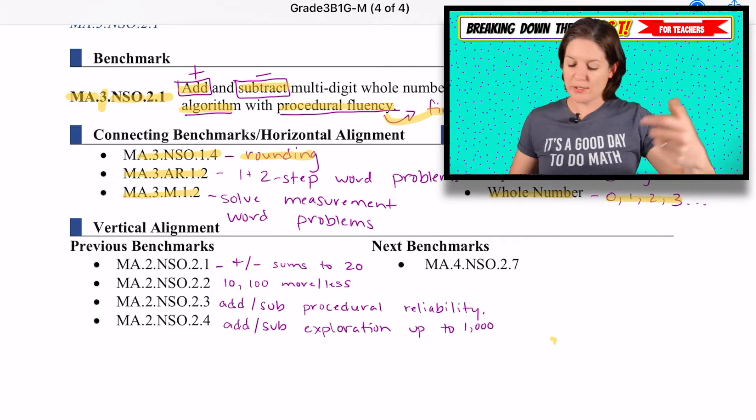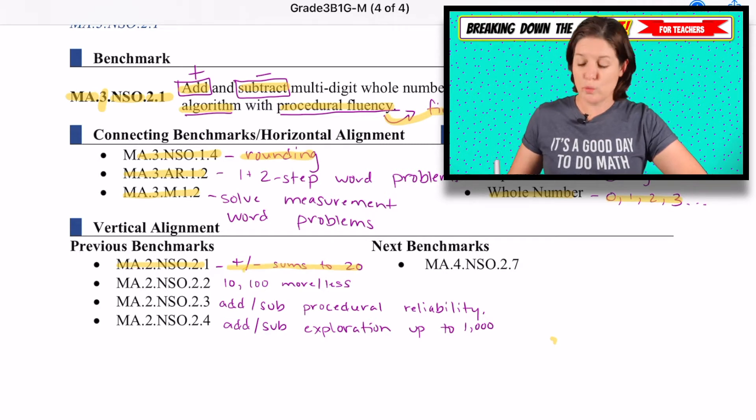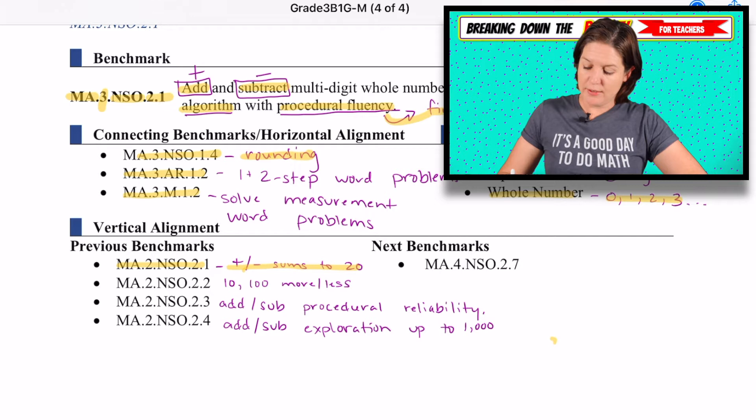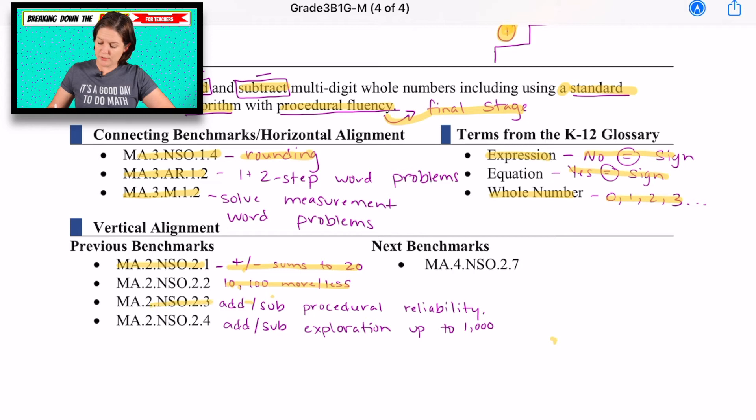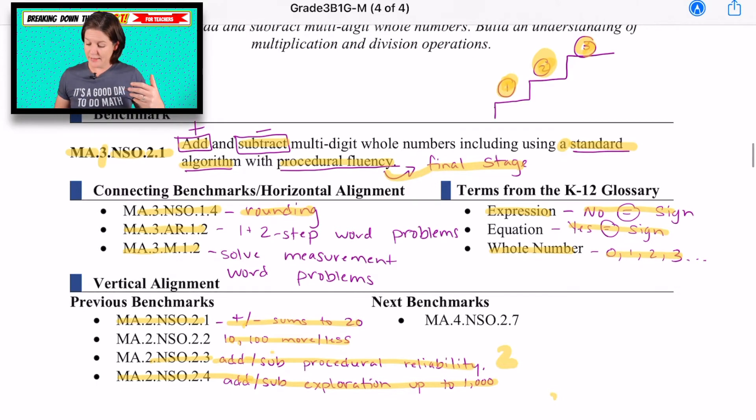Okay, so where are they coming from? And where are they going to? Well, they're coming from second grade, where they're adding sums to 20, adding and subtracting sums to 20. Also finding 10 or 100 more or less. NSO.2.3 for second grade is adding and subtracting using procedural reliability. That's that second step that I was talking about. And MA.2.NSO.2.4 is adding and subtracting exploration up to 1000. So taking that step up into this standard.